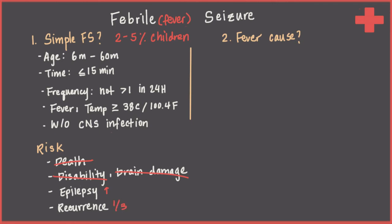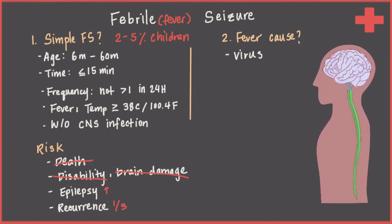Now that we've defined what simple febrile seizures are, the second question is: what caused the fever? The most common cause is just your run-of-the-mill virus — the colds and respiratory infections that kids get very frequently. While that's the most common, the reason we think about what caused the fever is because we don't want to miss other causes. The big thing to think about is whether or not we could have meningitis. Meningitis is an infection in the layers of tissue that wrap around the brain and spinal cord, called the meninges. I put a star next to meningitis because it's a very dangerous condition. Unlike febrile seizures, meningitis can cause disability, brain damage, and even death in some cases — so we never want to miss this.